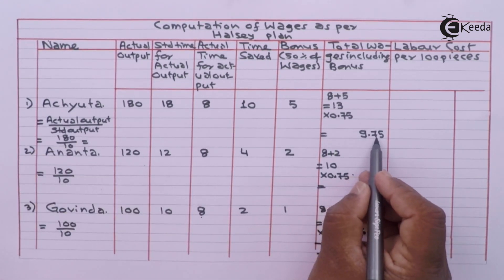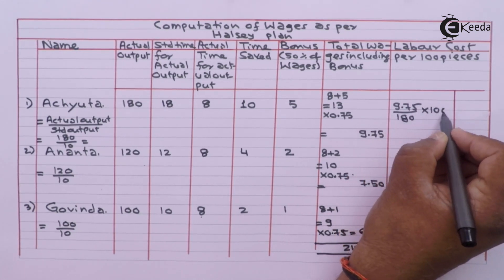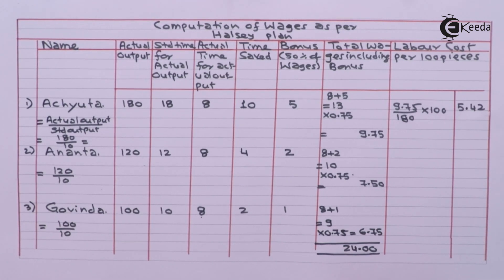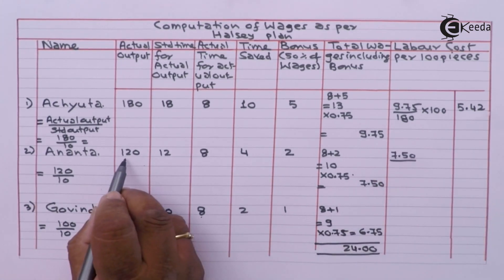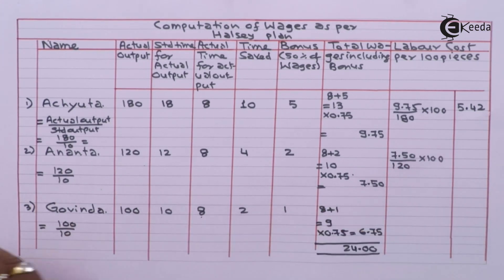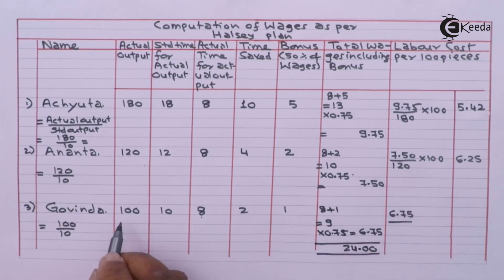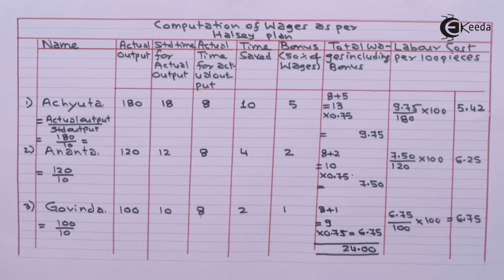Now we calculate labor cost per 100 pieces under the Halsey plan. In the case of Achut, wages are 9.75 for 180 units: 9.75 divided by 180 multiplied by 100 is approximately 5 rupees 42 paise. In the case of Anand, 7 rupees 50 paise divided by 120 units multiplied by 100 is 6 rupees 25 paise. In the case of Govind, 6 rupees 75 paise. So we have calculated under the Halsey plan the labor cost per 100 pieces as well as respective wages.